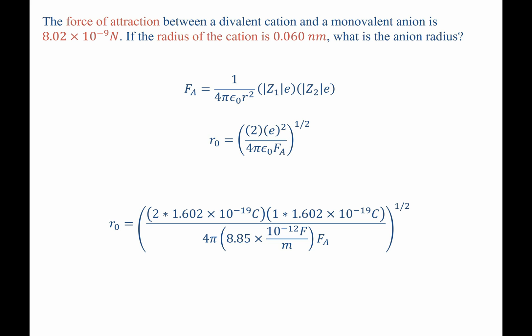When we put in values for this, we can actually solve for what R naught, our interatomic equilibrium separation distance would be. And we find that it's equal to 2.39 × 10^-10 meters, which if we convert that to nanometers, is simply 0.239 nanometers.